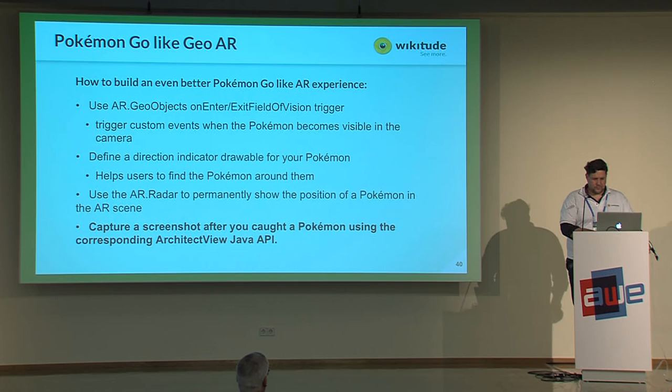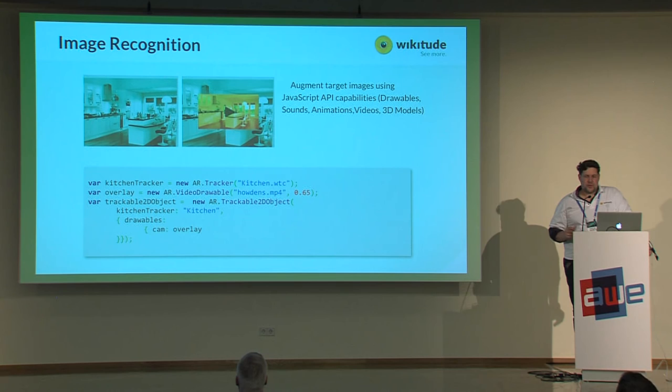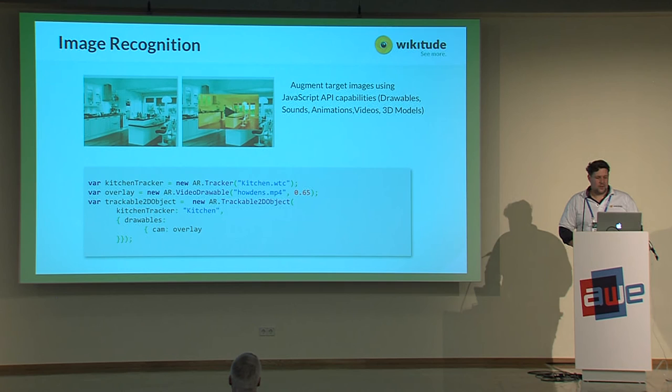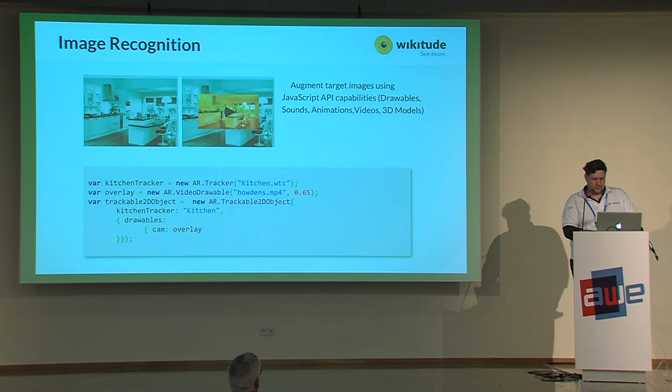The SDK also offers image recognition and object recognition. Here's an example of augmenting a catalog page: the gray page is defined as a tracker. As an overlay, we define a video drawable with a locally stored asset — the Houdini MP4 file scaled to 65%. Every time that particular image is shown, a video frame is drawn on top of it.